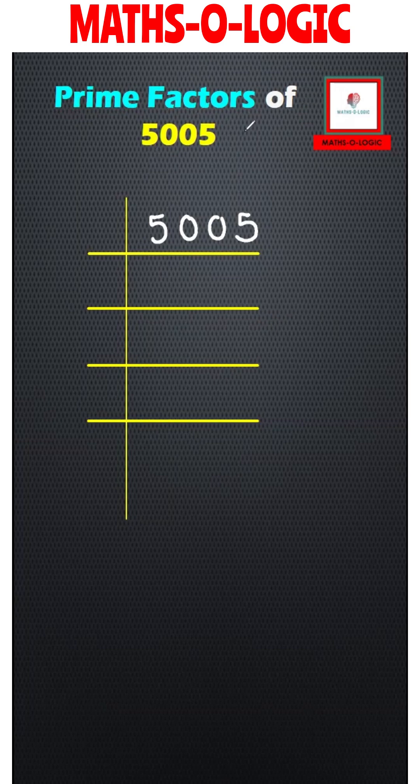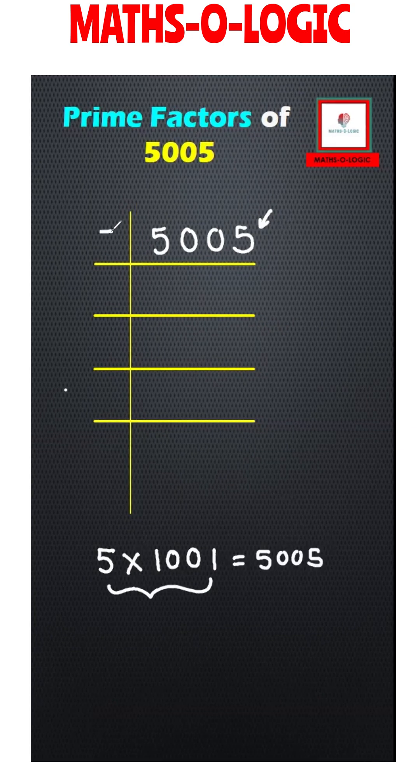Prime factors of 5005. I can see that 5 can be multiplied with this number, so I can get one of the factors. Now I have got 5, the first prime factor.